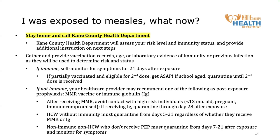During quarantine, you will want to stay away from public spaces, avoid contact with others, and monitor for symptoms of measles. Non-immune contacts will be actively monitored for symptoms by Kane County, in addition to school-aged children with only one dose despite their presumed immunity. Anyone else with presumed immunity can self-monitor for symptoms.